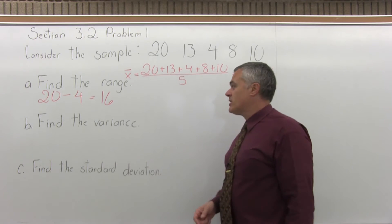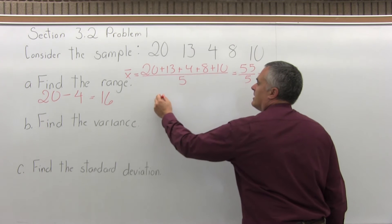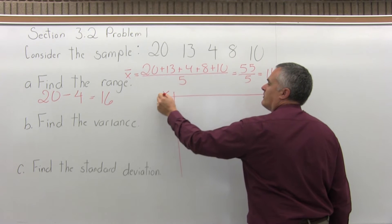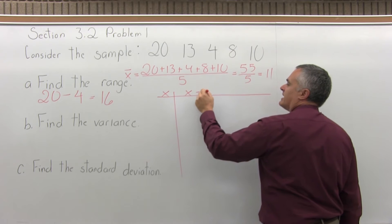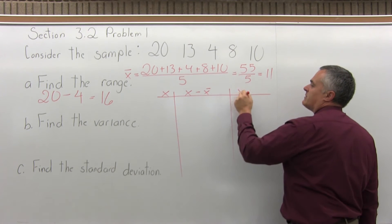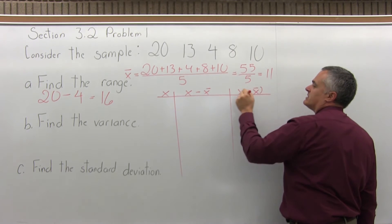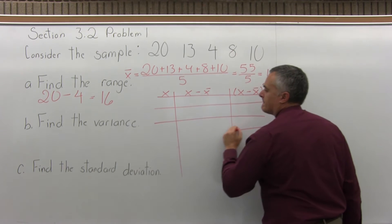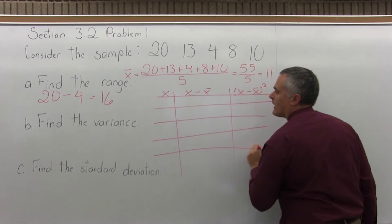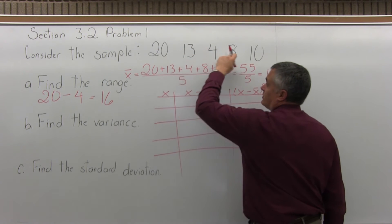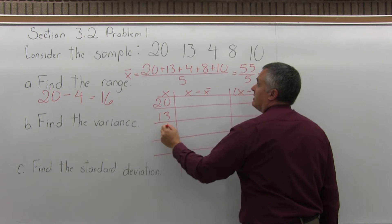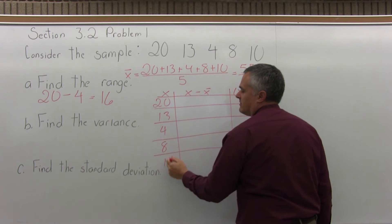Step 2, fill out the chart. Our chart will have three columns: one for x, one for x minus x-bar, and one for (x minus x-bar) raised to the second power. So for the x-column, just put in your data values. We have 20, 13, 4, 8, and 10.